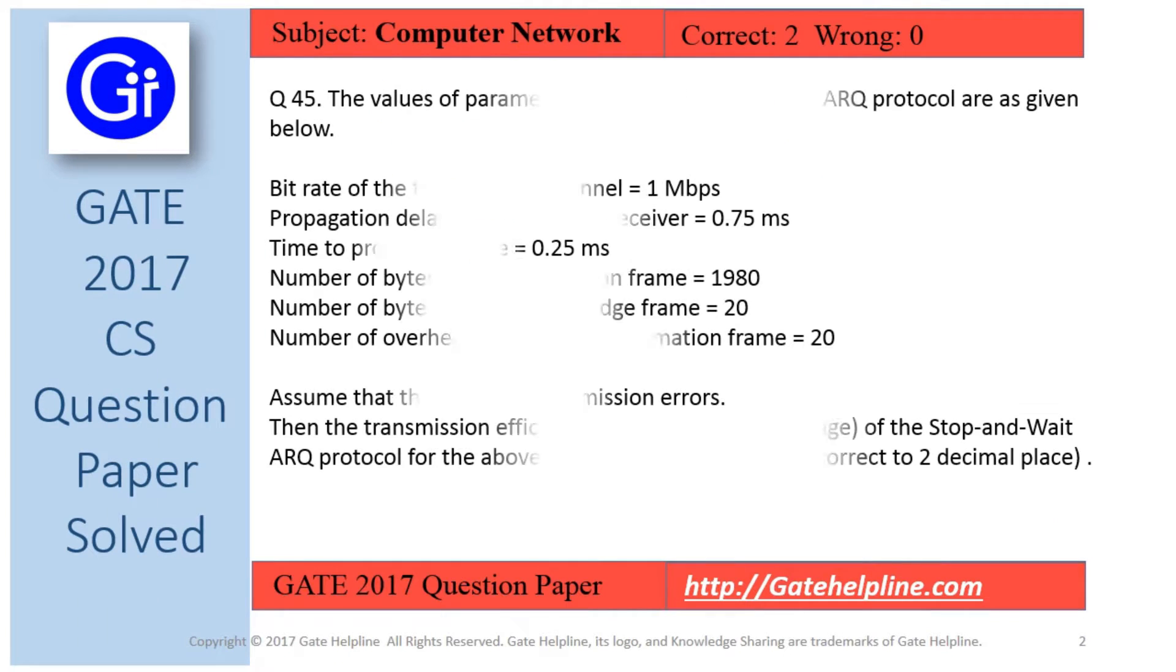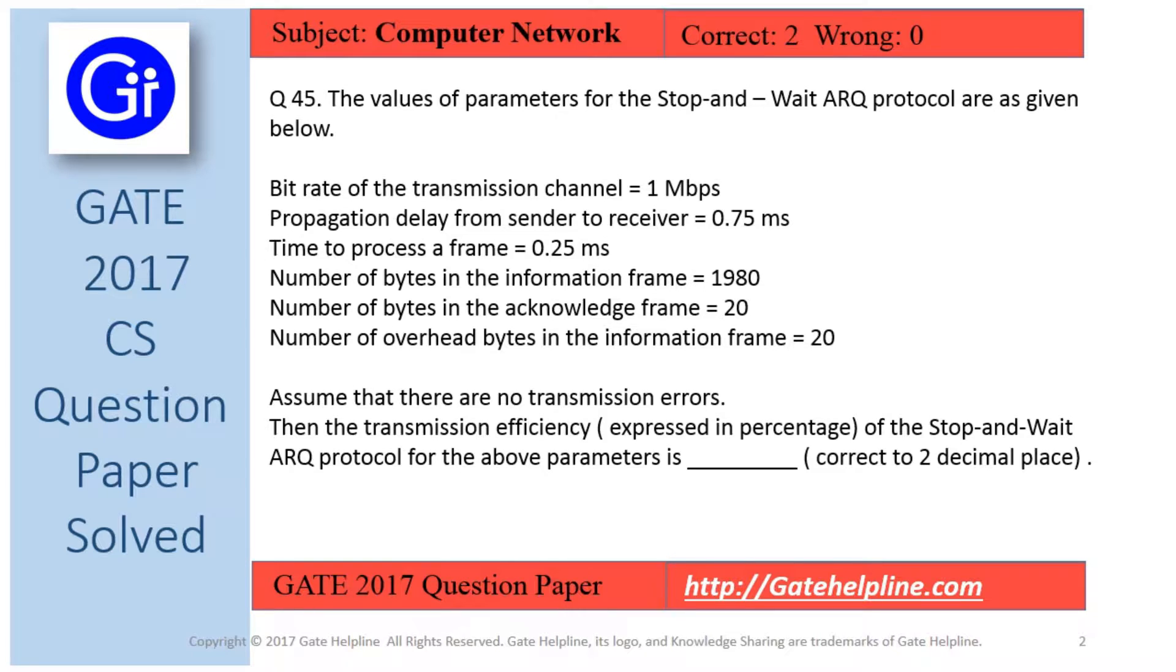Question number 45: The values of parameters for the Stop-and-Wait ARQ protocol are as given below. Bit rate of transmission channel is 1 Mbps, propagation delay from sender to receiver is 0.75 ms, time to process a frame is 0.25 ms, number of bytes in the information frame is 1980, number of bytes in the acknowledgement frame is 20, number of overhead bytes in the information frame is 20.